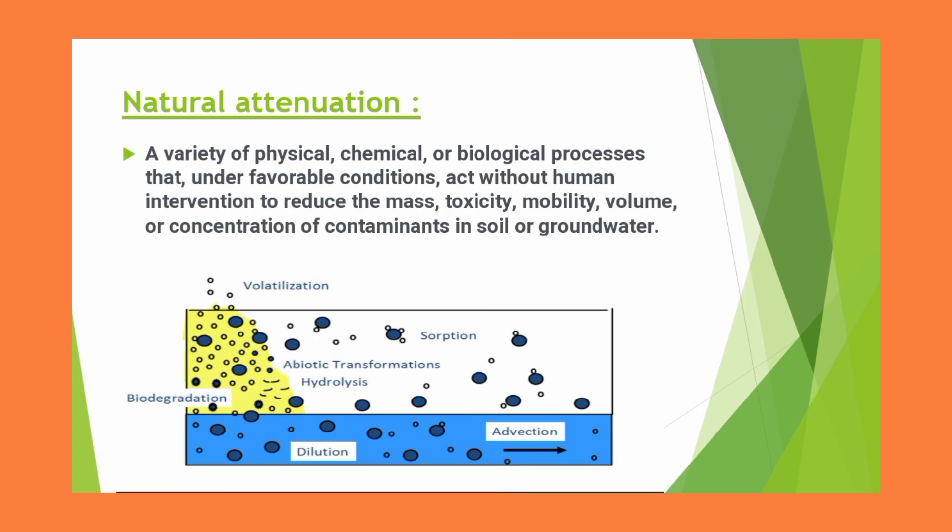Whatever activities the microbes perform on contaminants will proceed at a smooth pace — this is natural biodegradation by indigenous microbes. Natural phenomena such as sorption, hydrolysis, dilution, and biodegradation remove contamination. For example, microbes bind with contaminants through sorption so they don't spread, then convert them to less harmful forms, or volatilize or dissolve them.